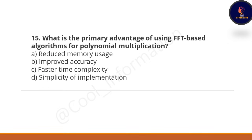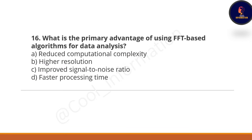Next question: what is the primary advantage of using FFT-based algorithms for polynomial multiplication? Option A is reduced memory usage, Option B is improved accuracy, Option C is faster time complexity, and Option D is simplicity of implementation. The correct option is Option C — faster time complexity.